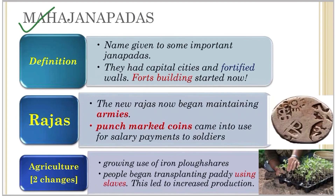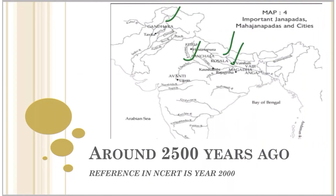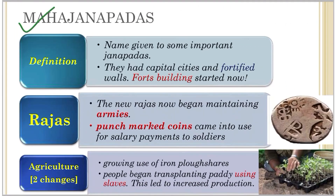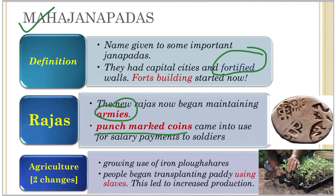These Janapadas and Mahajanapadas all developed along the banks of rivers. Most Mahajanapadas had a capital city, and many were fortified with huge walls of wood, brick, or stone. Fort-building was a new development that led to the need for resources like labor, army, and food, so the new Rajas began maintaining armies. Punch-marked coins came into use for paying salaries to soldiers, and we will study these in detail in Chapter 8.